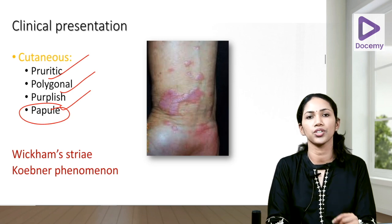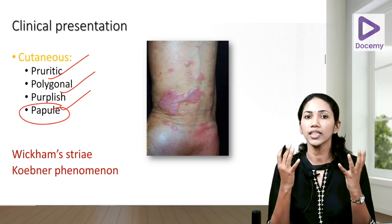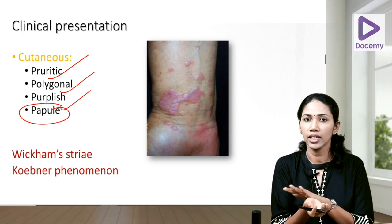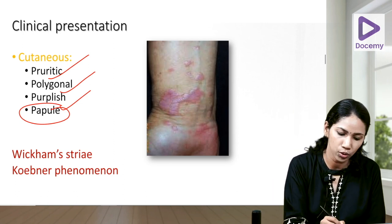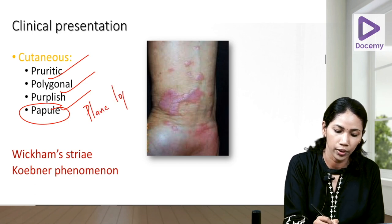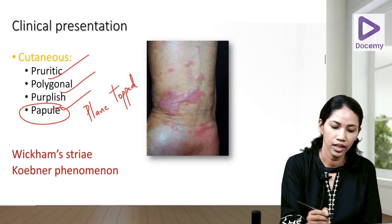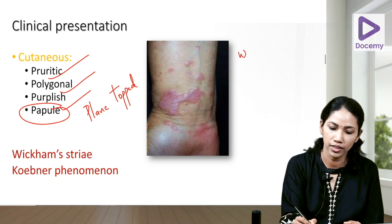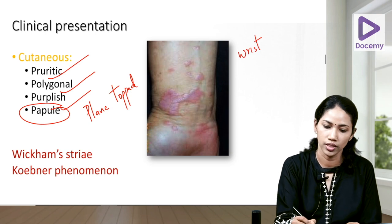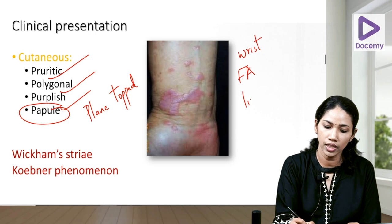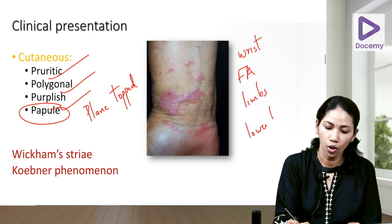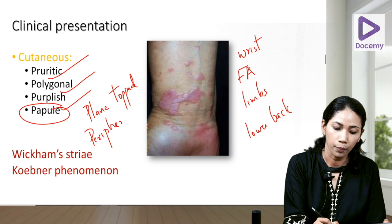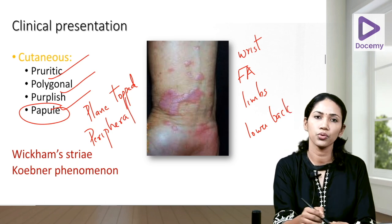The lesions are flat-topped, which is another P — plain top. They occur at peripheral or distal sites: common sites include the wrist, forearm, distal limbs, and lower back. So these papular lesions are characterized by all the P's: pruritic, polygonal, purplish, plain-topped, and peripherally located.